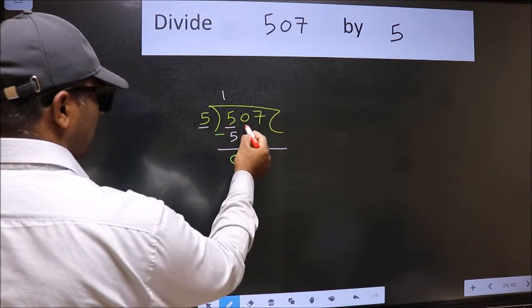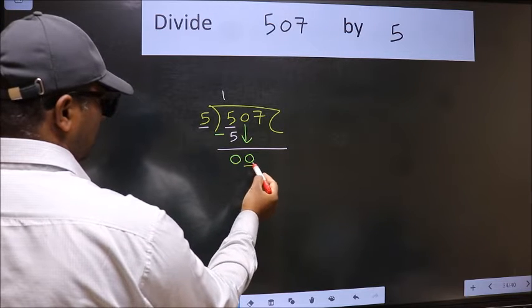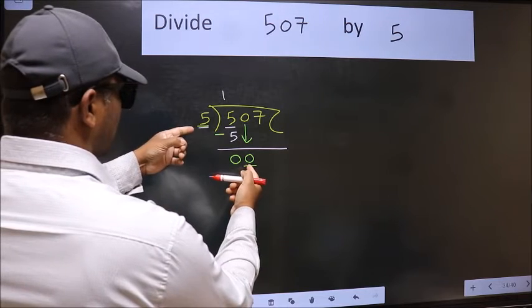After this, bring down the beside number. So, 0 down. Now, here we have 0 and here 5. 0 is smaller than 5.